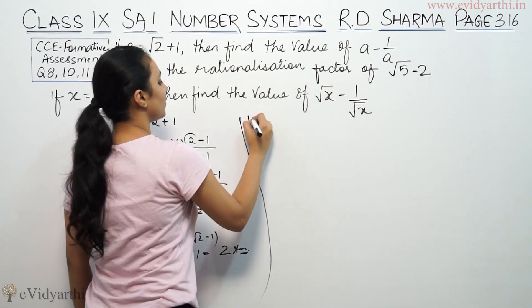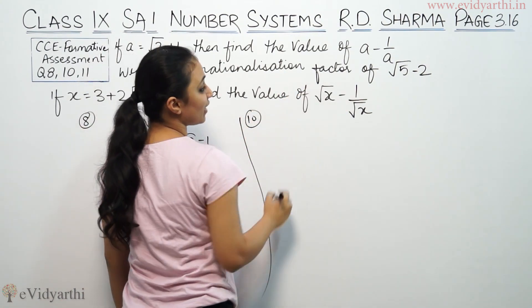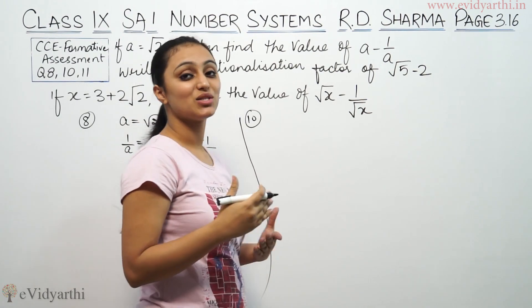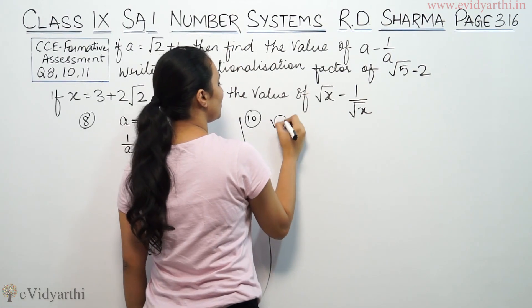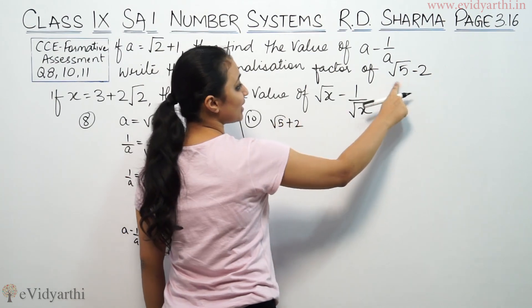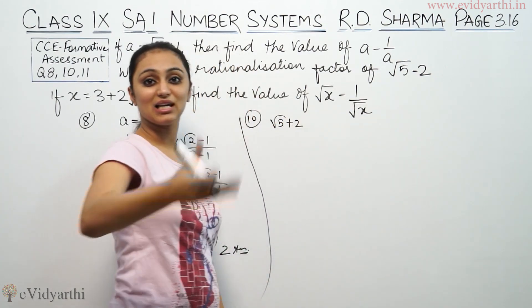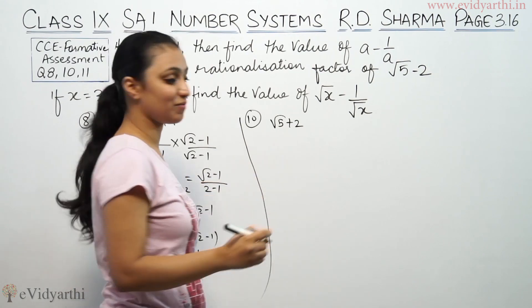Similarly question number 10, find the rationalization factor of 5 root 5 plus 2. What do we use for rationalization factor of root 5 plus 2? To rationalize it, we use the opposite sign, which is root 5 minus 2.